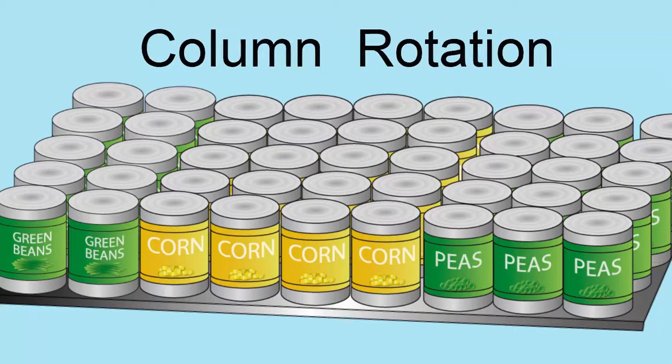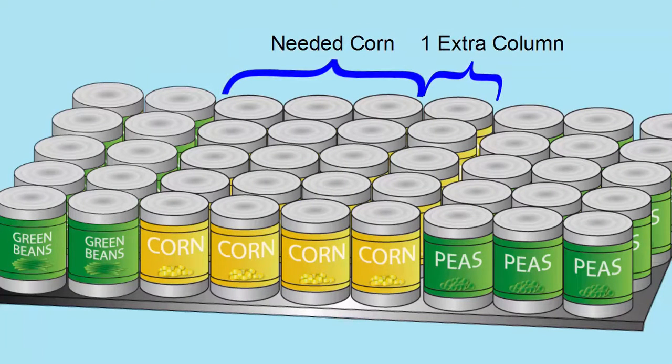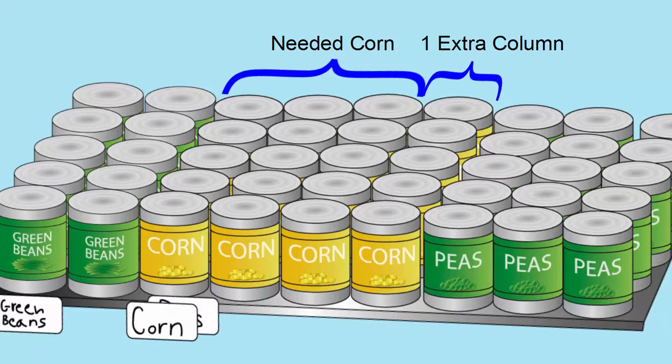Let's say that you've done the math and you know that your family needs three columns of corn. So we're going to add one extra column just to make sure you always have enough food. Then we're simply going to add labels on the left side of each section of food.